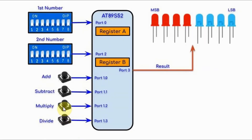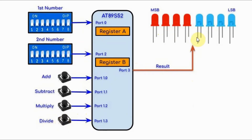When we press the multiply button, the low byte result will be displayed first, and then after some delay, the high byte will be displayed. And if we press the divide button, the quotient will be displayed first, and then after some delay, the remainder will be displayed.